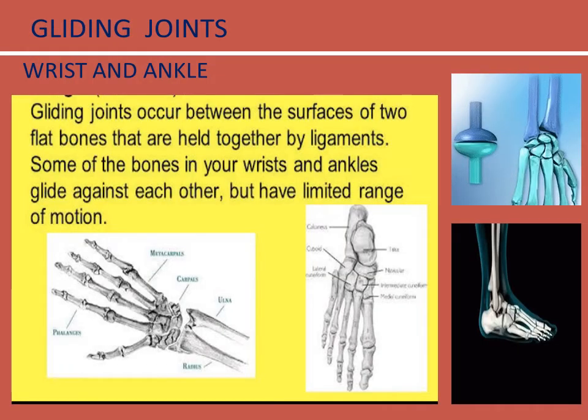Gliding joints are found in the wrist and ankle. They occur between the surfaces of two flat bones that are held together by ligaments. Some of the bones in your wrists and ankles glide against each other but have a limited range of motion.